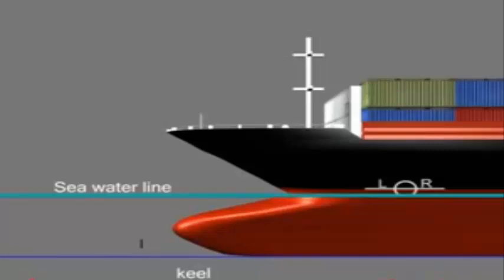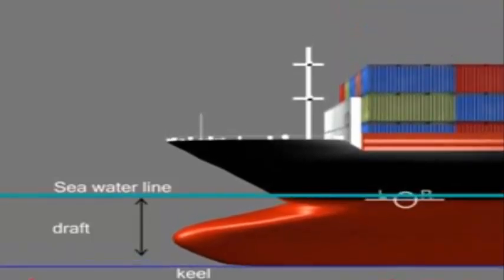The plimsoll line mark allows one to know the safe draft. Draft is the vertical distance between the water line and the bottom of the hull or keel. The heavier the load, the more is the draft length.